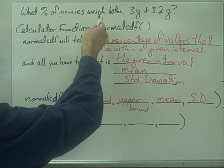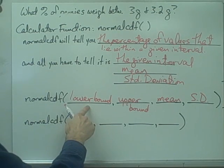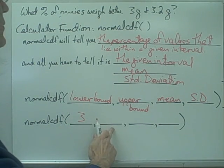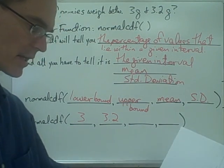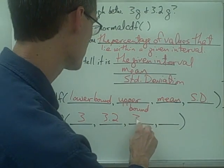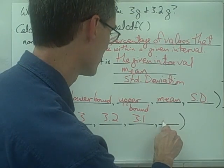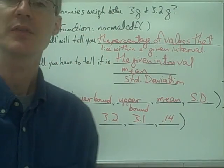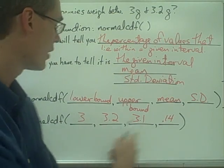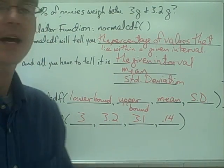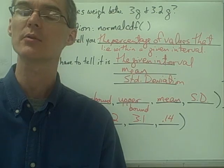For example: what percent of pennies weigh between 3 grams and 3.2 grams? Bring up the Normal CDF function, enter the lower bound of 3, the upper bound of 3.2, the mean of 3.1 grams, and the standard deviation of 0.14. Hit Enter, and your calculator will give you the percentage of all pennies that lie between those two values. If you have a TI-84, try that out — we'll look at this and other examples tomorrow in class.